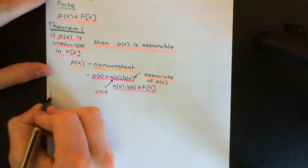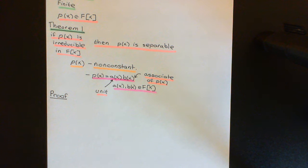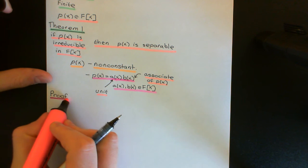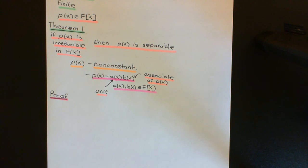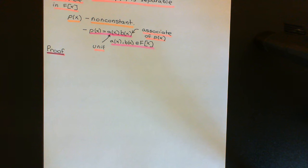Now let's discuss the proof. The proof is going to start off exactly the same way as the proof for this equivalent statement in rings of polynomials over a field of characteristic zero. However, we're going to have to add something in because something that was true there is not going to be true here, which was crucial for the argument. Just like in the previous video, the way we're going to prove this is to show that if p(x) is irreducible, then it is relatively prime to its derivative. We know from our video on separable polynomials that in an arbitrary ring of polynomials over an arbitrary field, if a polynomial and its derivative are relatively prime, then we can instantly conclude that p(x) is separable. So that's going to be our tactic.